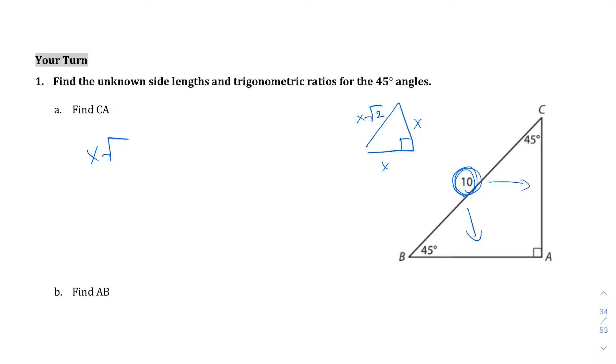According to our reference triangle, our hypotenuse is x times √2, and in this case it equals 10. So we're just going to work backwards to find x. Let's go ahead and do that.